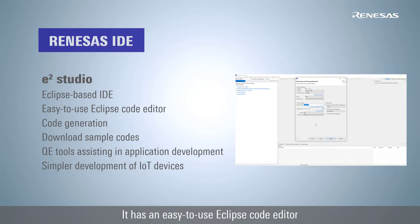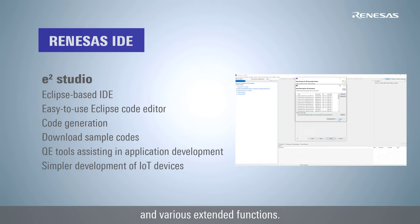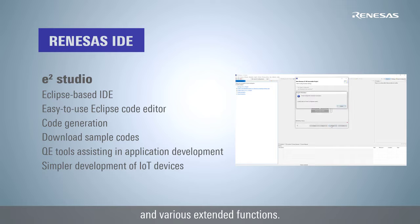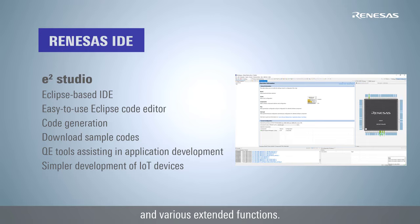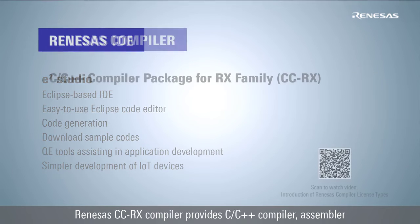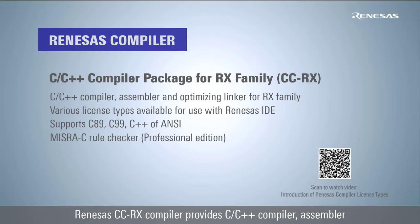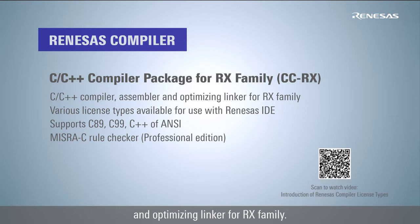In addition to an easy-to-use Eclipse code editor, the E-Square Studio has various extended functions for more efficient development, such as a code generation assistance tool and QE tools for assisting in application development. The Renesas CCRx Compiler provides a C/C++ compiler, assembler, and optimizing linker for the RX Family.